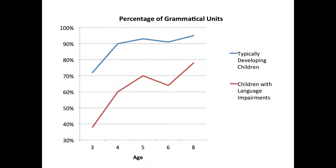That's another gap, because remember between ages four to eight with typically developing children, they're at that ninety percent mark. Individuals with language impairments are at the seventy-eight percent mark. So we're always going to see this gap in percentage of grammatical units between typically developing children and children with language impairments, and you can observe that in the graph on screen. That gap exists through ages three to eight.